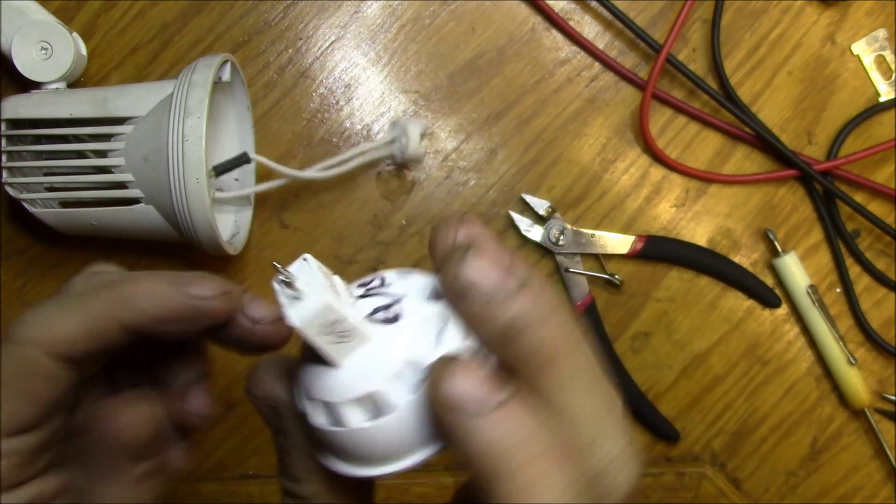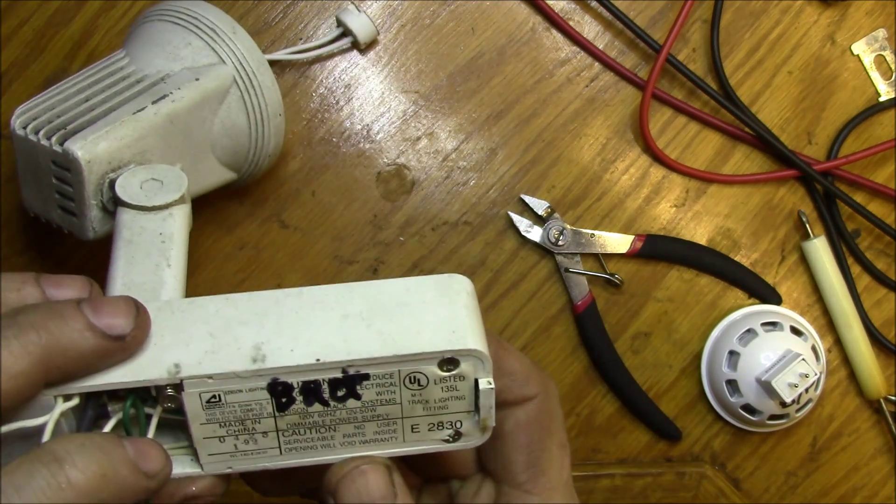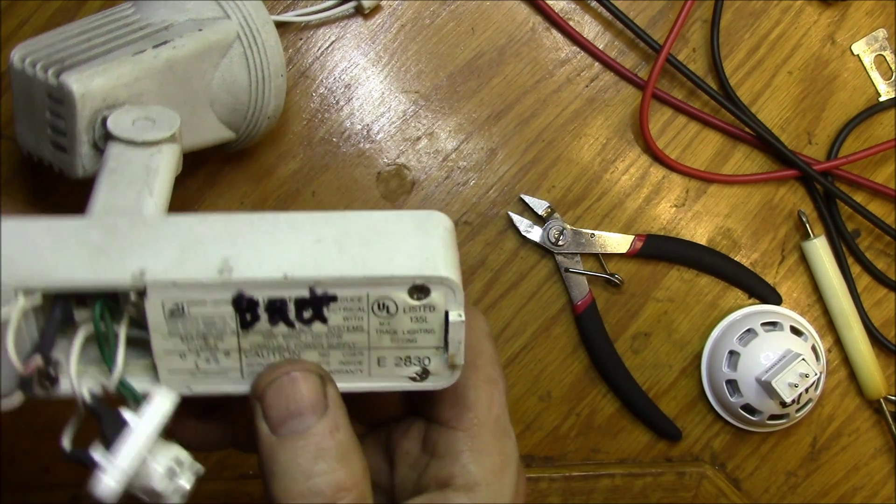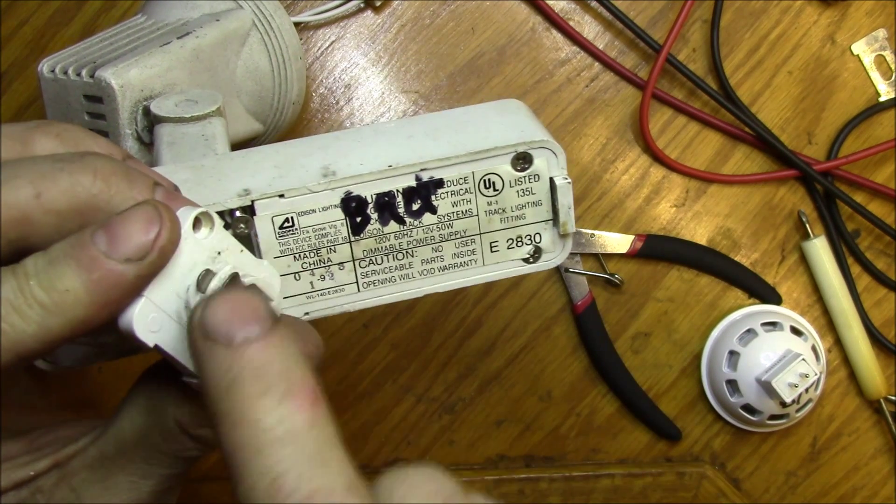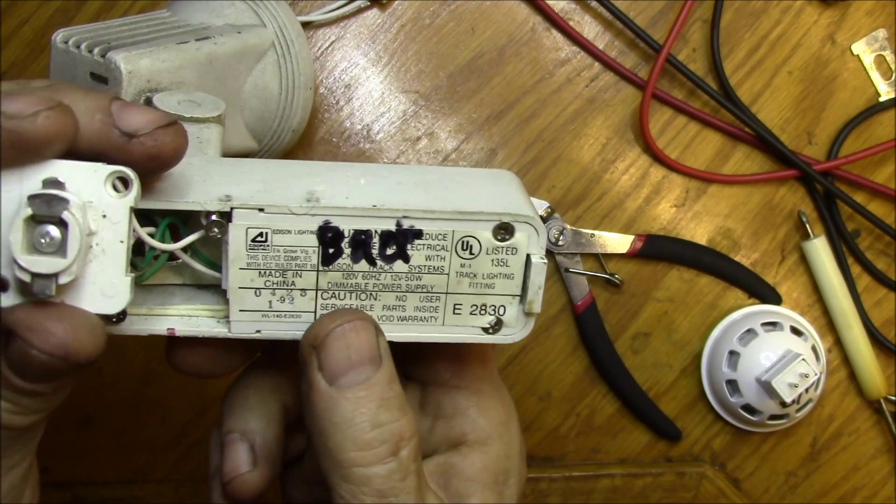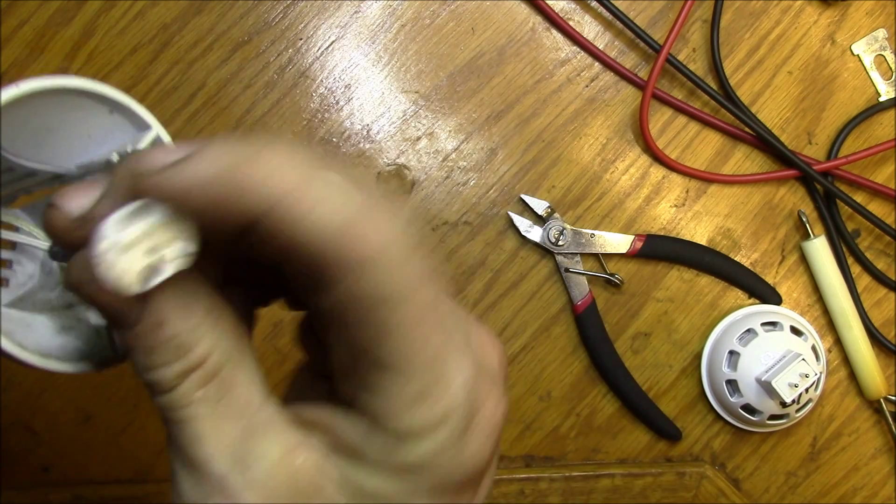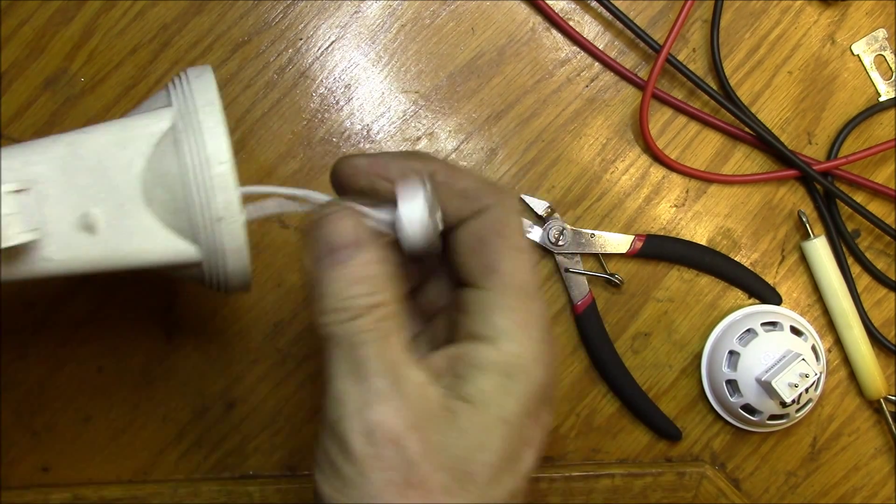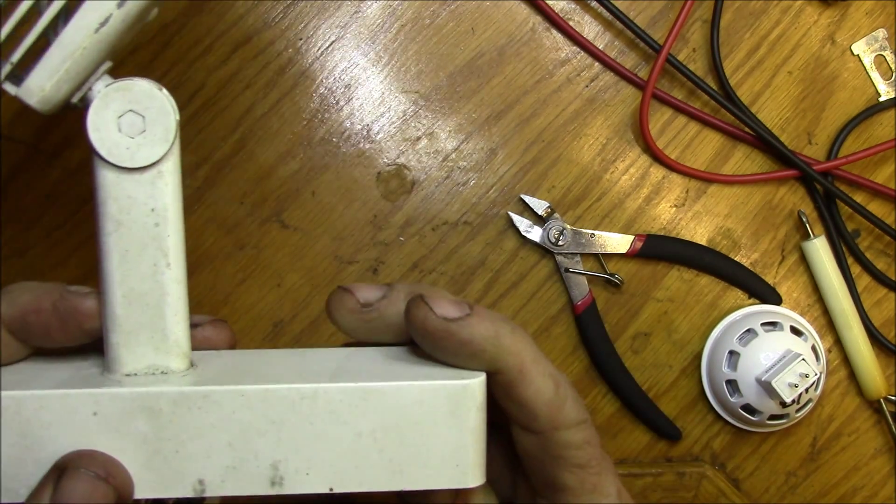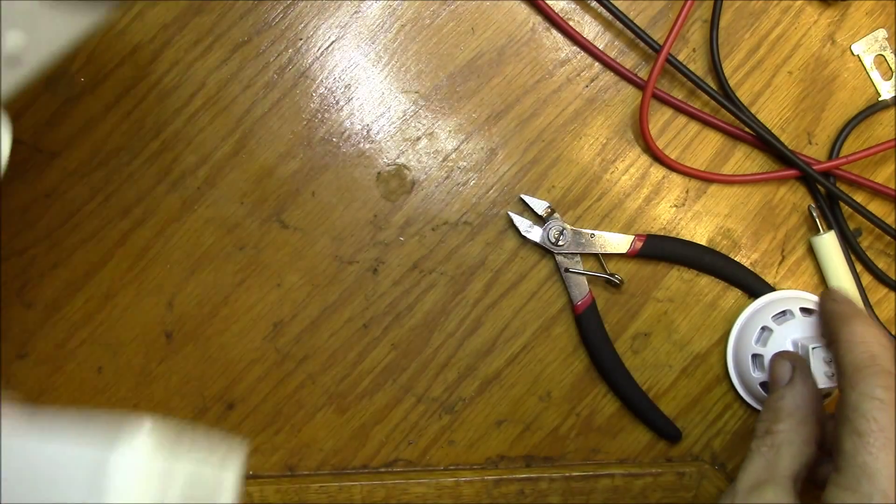So this only applies to low voltage track lights, although the low voltage is kind of a misnomer because this is not low voltage - this is your line voltage, 120 or 230 volts depending on what country. The only part that's low voltage is right here. Everything else in here is high voltage. So they call them low voltage track lights, but the light is low voltage, the bulb, but everything else is high voltage.